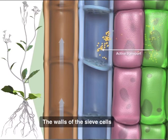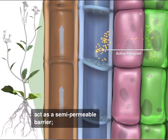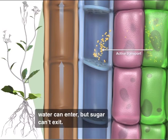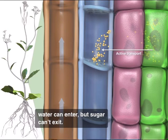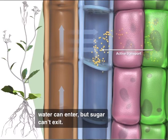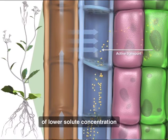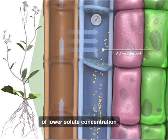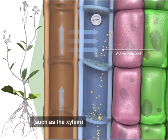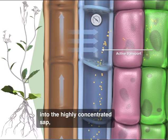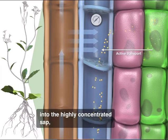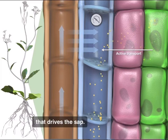The walls of the sieve cells act as a semi-permeable barrier. Water can enter, but sugar can't exit. Osmosis draws water from areas of lower solute concentration, such as the xylem, into the highly concentrated sap, raising pressure in the tube that drives the sap.